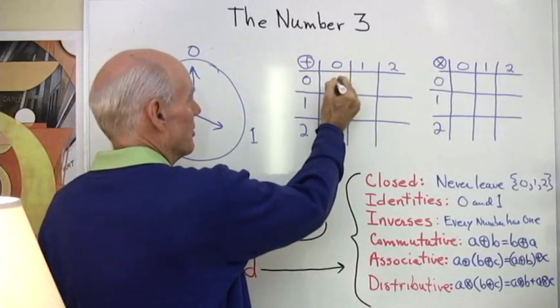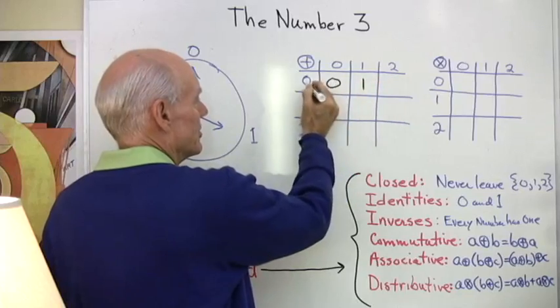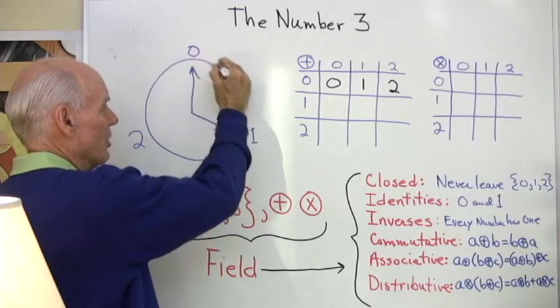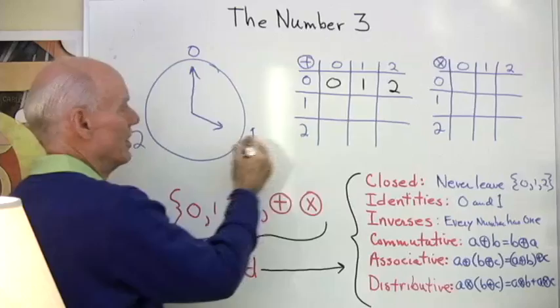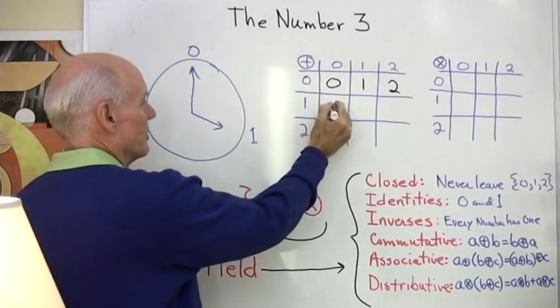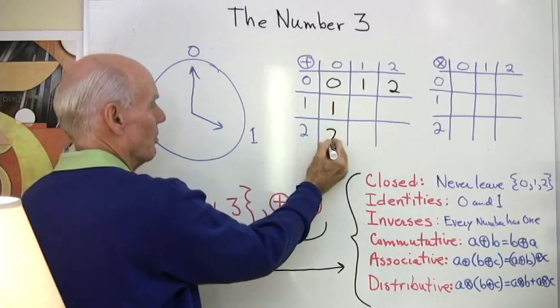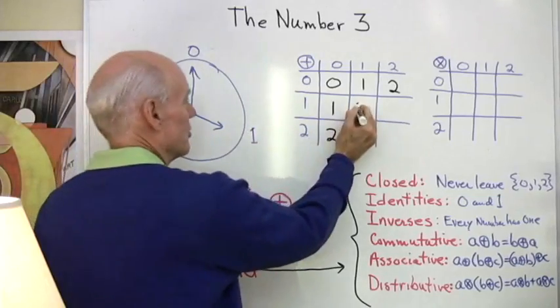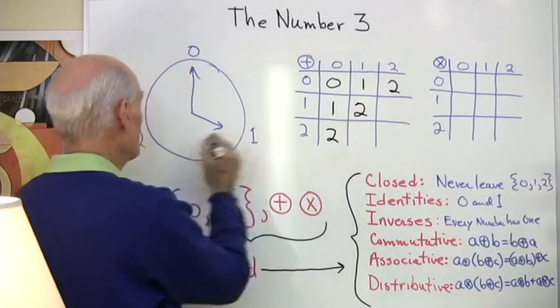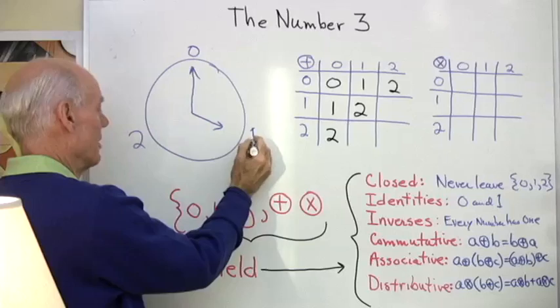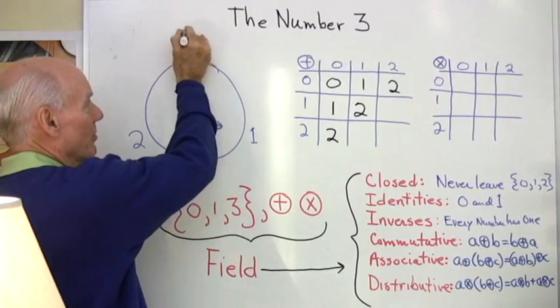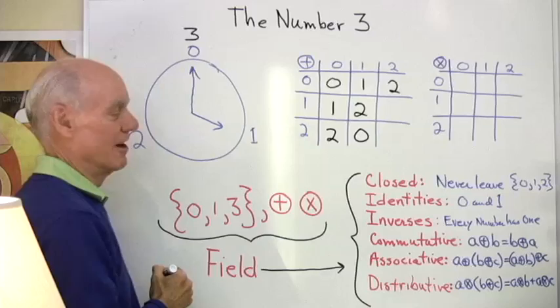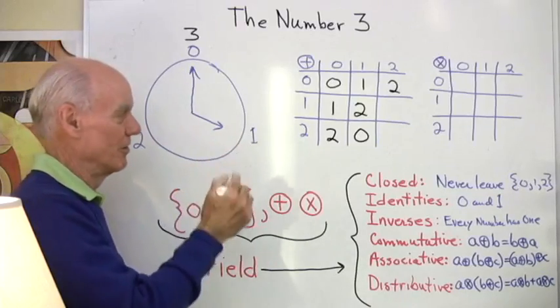I'm going to say 0 plus 0 is 0, 0 plus 1 is 1, 0 plus 2 is 2. Then 1 plus 0 is 1, 2 plus 0 is 2. 1 plus 1, I'll go down here: 1, and then one more, I get to 2. 1 plus 2 would be 3 normally, but I have 1 plus 1, 2, I get back to 0. I would be thinking 3, so I'm just going to say 0 right there. Every time I get to 3, it's the same as 0 because I start over again.